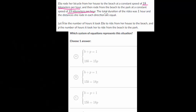The total duration of the rides was one hour, and the distances she rode in each direction are equal. Let B be the number of hours it took Elia to ride from her house to the beach. So let's write that down.